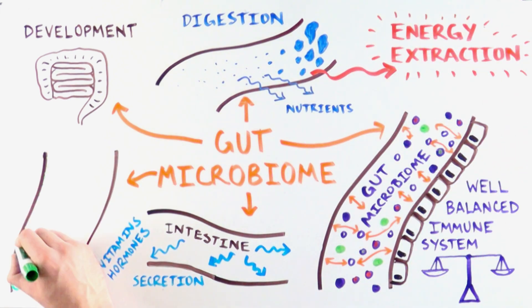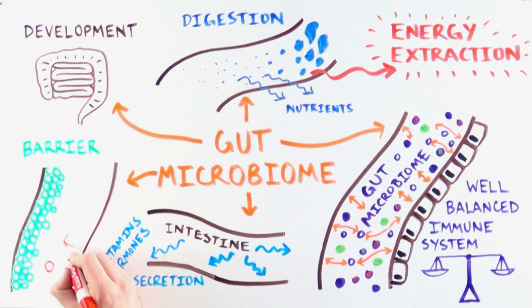Finally, the gut microbiome provides an effective barrier against infection by harmful pathogens in our intestine. So where does this microbiome come from?